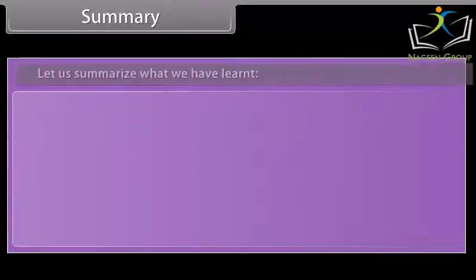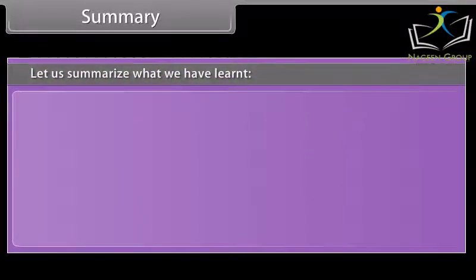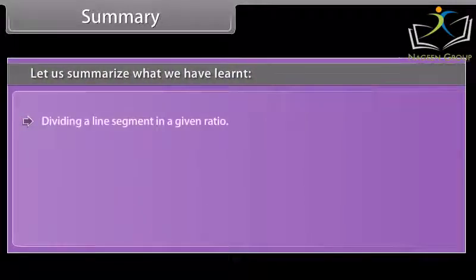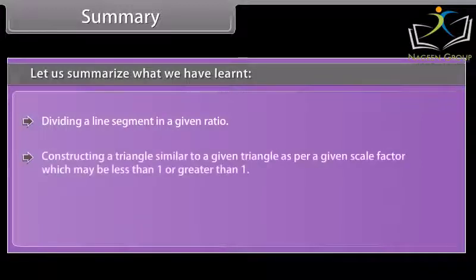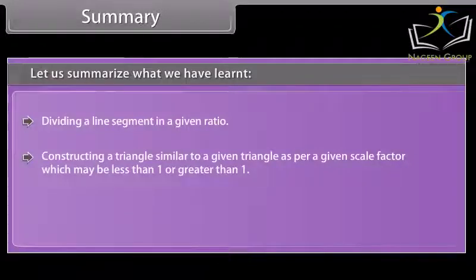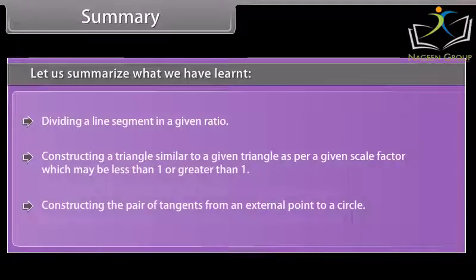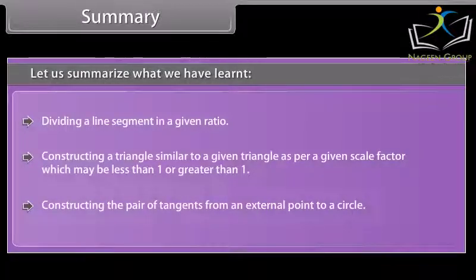Let us summarize what we have learned: dividing a line segment in a given ratio; constructing a triangle similar to a given triangle as per a given scale factor which may be less than 1 or greater than 1; and constructing the pair of tangents from an external point to a circle.